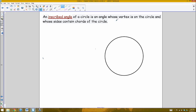An inscribed angle is an angle whose vertex is on the circle and whose sides are made up of chords. For example, this would be angle ACB, which is inscribed.